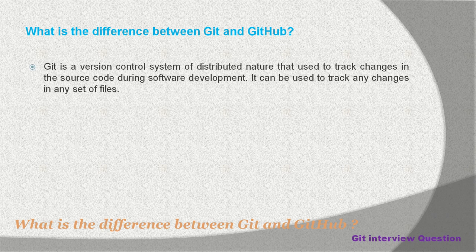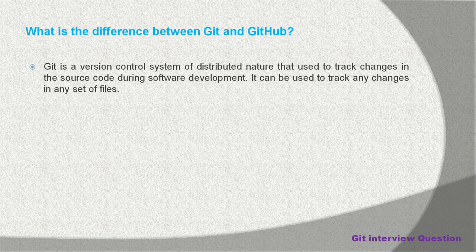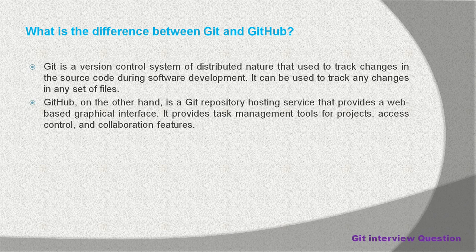When we talk about Git, Git is a version control system of distributed nature that is used to track changes in the source code during software development. It can be used to track any changes in any set of files. Basically, Git is a tool that a developer has to install on their local computer system to use it.